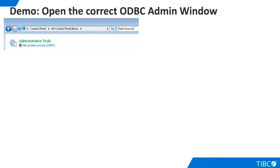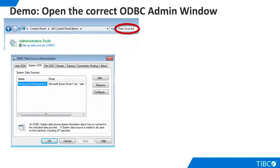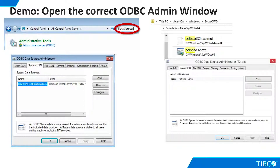Windows also uses different control panel interfaces for 32 and 64-bit DSNs. If we search for data sources in the Windows 7 control panel on a 64-bit machine, we get a link to the 64-bit administration interface, even though Windows does not explicitly label it as 64-bit. To get to the 32-bit administration window, we need to navigate to the syswow64 directory. WOW stands for Windows on Windows, and yes, it contains 32-bit resources, even though the name of the directory ends in 64. Search for odbcad32.exe in this directory, and double-click it to start the 32-bit administration window.